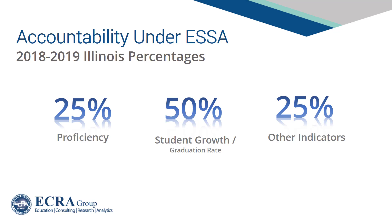Under the new ISBE accountability framework, student growth will contribute 50% to a school's quality rating. This is a radical shift from prior policies and will require schools to be more sophisticated in how they monitor individual student progress.